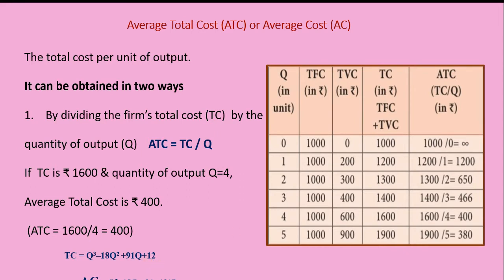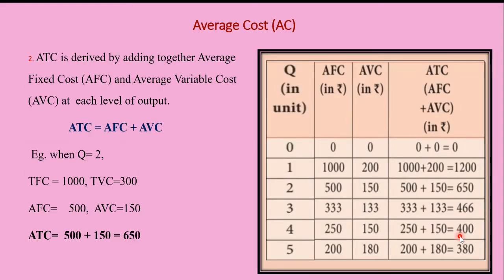From the table: TFC = 1000, TVC for outputs 0–5 are 0, 200, 300, 400, 600, 900, so TC = TFC + TVC giving 1000, 1200, 1300, 1400, 1600, 1900. ATC = TC / Q: 1000/0 = infinity, 1200/1 = 1200, 1300/2 = 650, 1400/3 = 466.67, 1600/4 = 400, 1900/5 = 380.